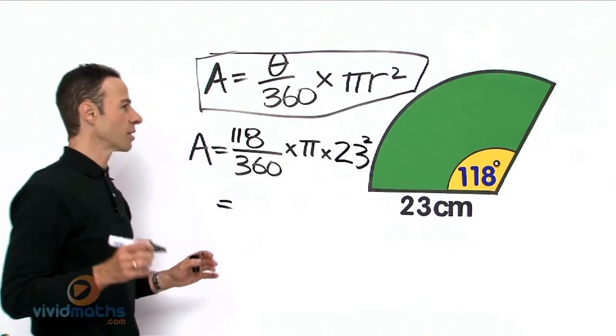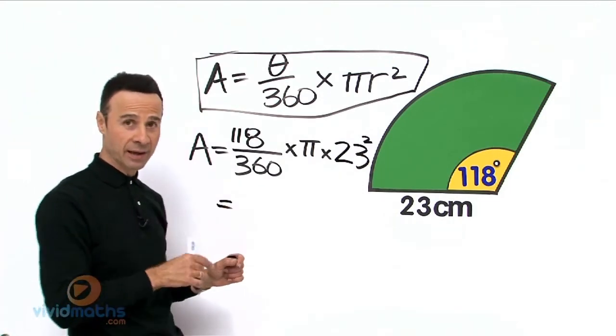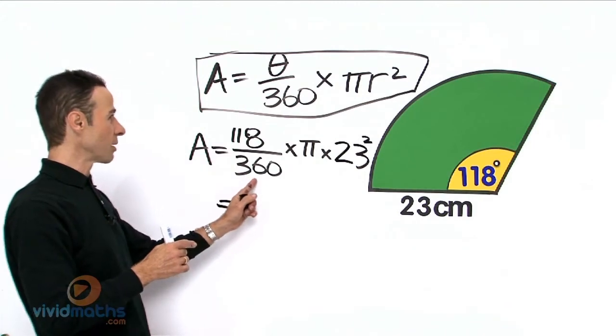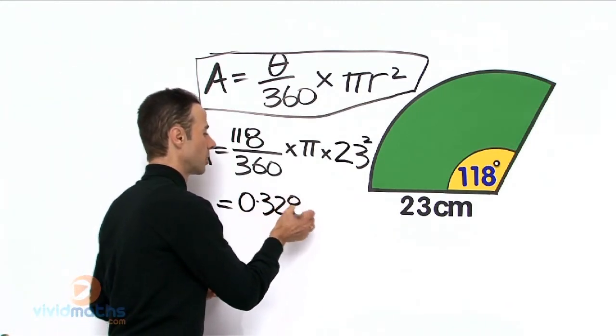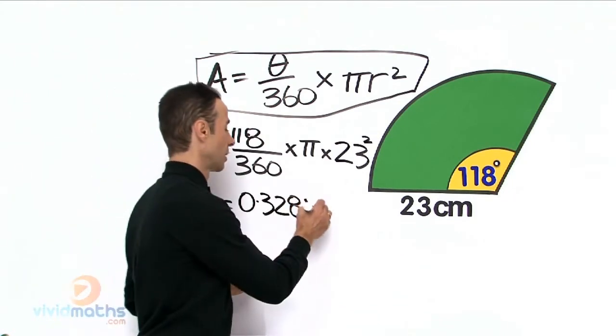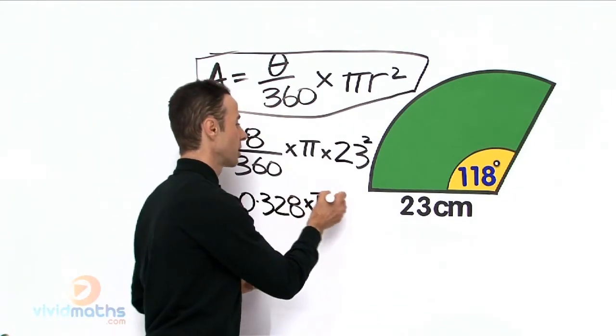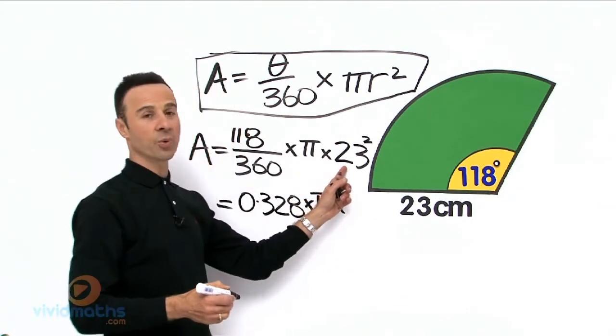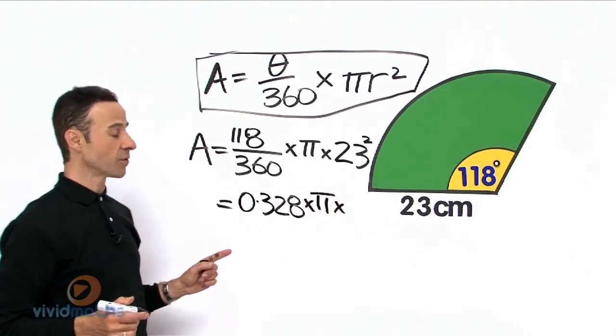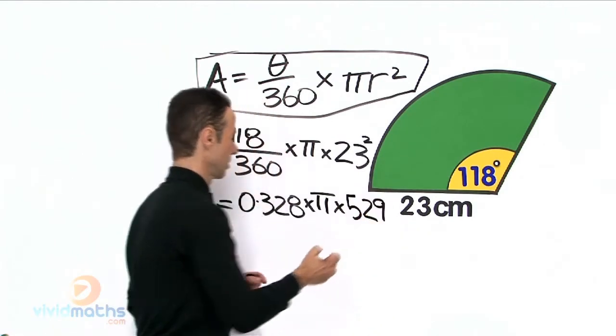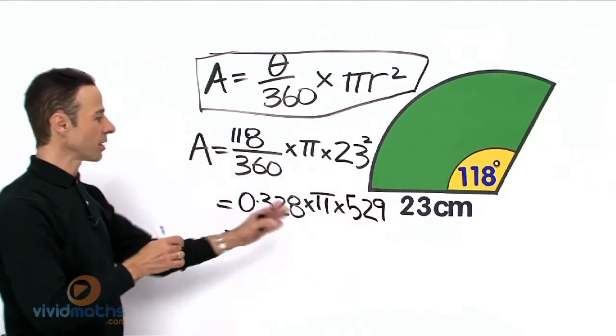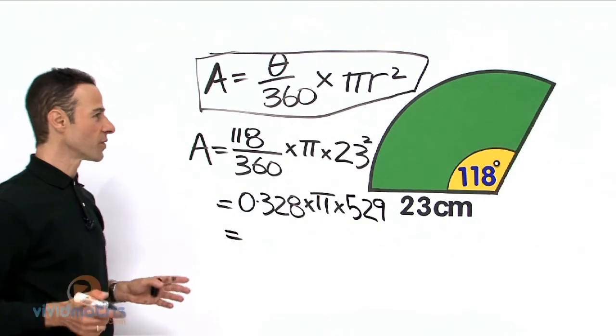Okay, let's plunk that straight into the calculator. On the calculator, 118 on 360 is rounded up, and that times pi, and then 23 squared on the calculator is 529. And that equals—plunk that on the calculator all in one hit will give us a grand total for the area.